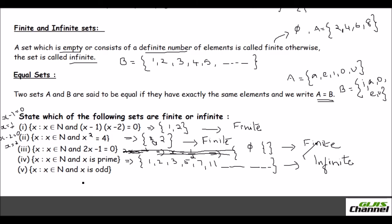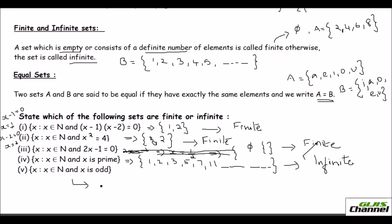Finally, here the fifth one, it says x is odd. So your set can be like natural number and odd number. So it is 1, 3, 5, 7, 9, likewise it goes. So here too, it is not ending. So you can say it is infinite set.